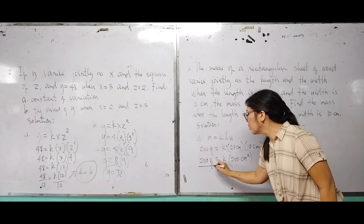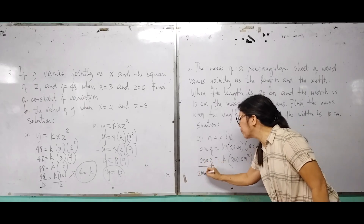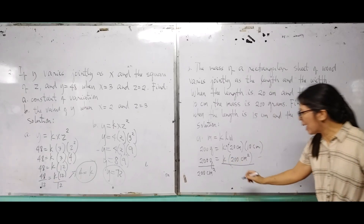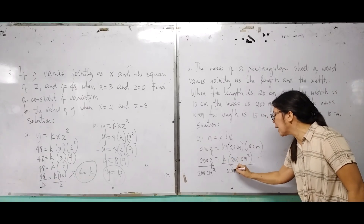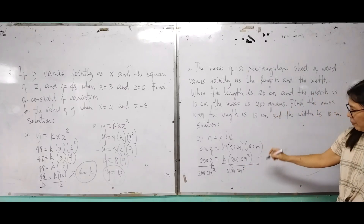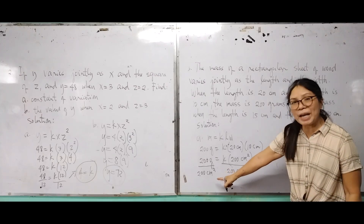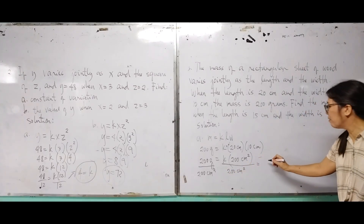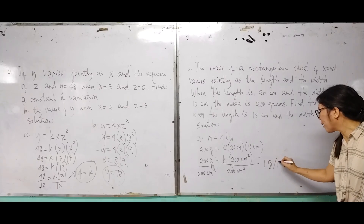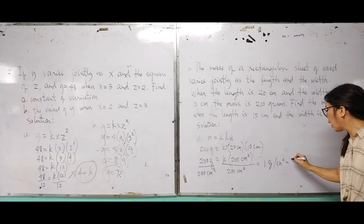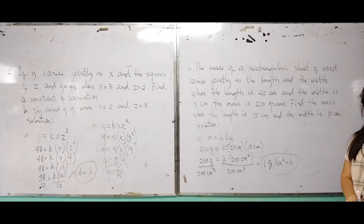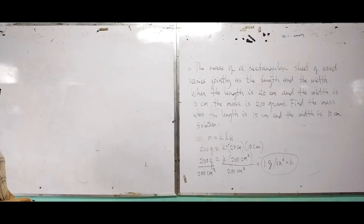Substitute mass with 200 grams, length with 20 centimeters, and width with 10 centimeters: 200 grams equals K times 200 centimeters squared. To solve for K, divide both sides by 200 centimeters squared. We get K equals 1 gram per centimeter squared.